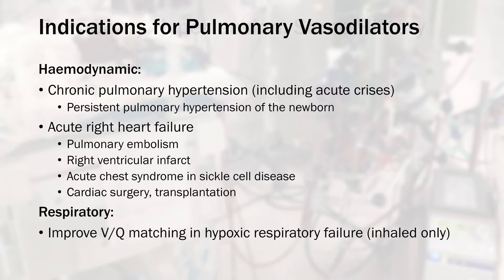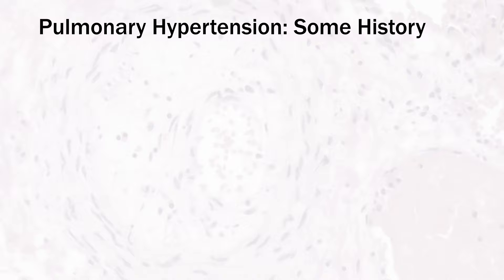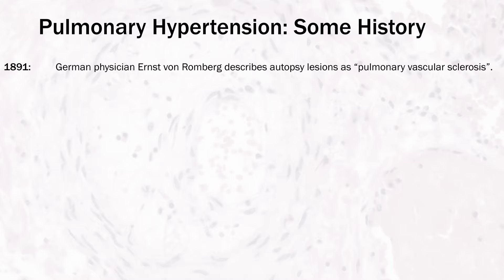Pulmonary arterial hypertension is a mysterious, rare, and lethal illness. Its history is intertwined with our understanding of vascular physiology as well as a series of accidental mass poisonings. The first specific references to PAH are from 1891, when German physician Ernst von Romberg described autopsy findings as pulmonary vascular sclerosis. In 1901, Abel Ascherza in Argentina linked similar lesions to a syndrome of dyspnea, cyanosis, and polycythemia. Progress was slow for a few decades as it was difficult to understand causal relationships and this was confounded by a widespread erroneous theory that it was a manifestation of syphilis.